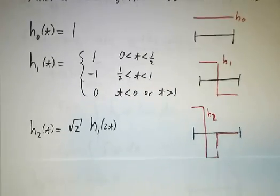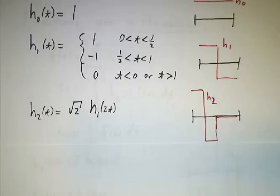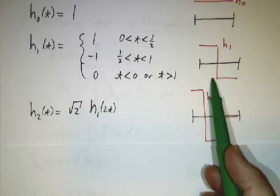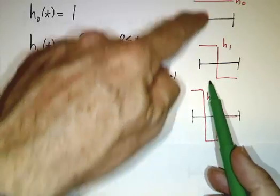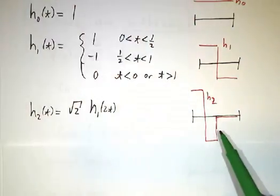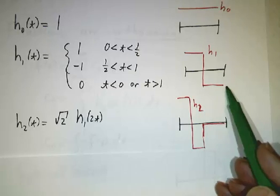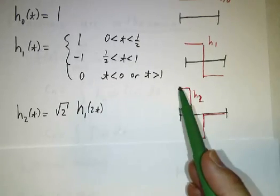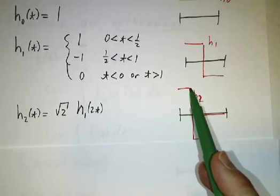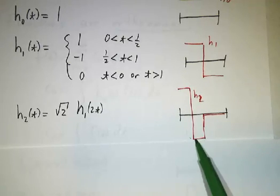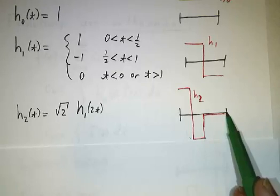The next function is a scrunched up version: you take this function and you squeeze it sideways and make it taller. So instead of being positive and then negative over the entire interval, it's positive and then negative in the first half of the interval. It's root 2 up to 0.25 and then minus root 2 from 0.25 to 0.5 and then it's 0.